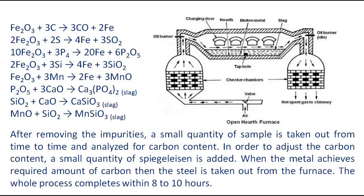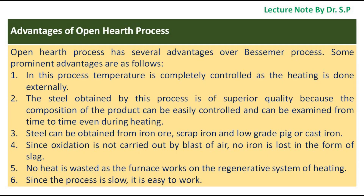The whole process completes within 8 to 10 hours. The open hearth process has several advantages over the Bessemer process. Temperature is completely controlled as heating is done externally. The steel obtained is of superior quality because the composition can be easily controlled and examined from time to time, even during heating. Steel can be obtained from iron, scrap iron, or low-grade pig or cast iron. Since oxidation is not carried out by a blast of air, no iron is lost in the form of slag. No heat is wasted as the furnace works on the regenerative system of heating. Since the process is slow, it is easy to work.